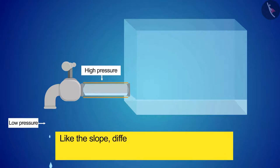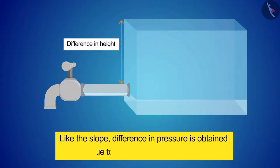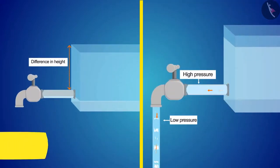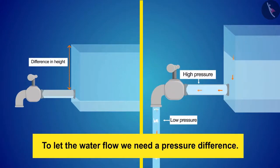Here too, like the slope, difference in pressure is obtained due to difference in height. So we can conclude that to let the water flow, we need a pressure difference.